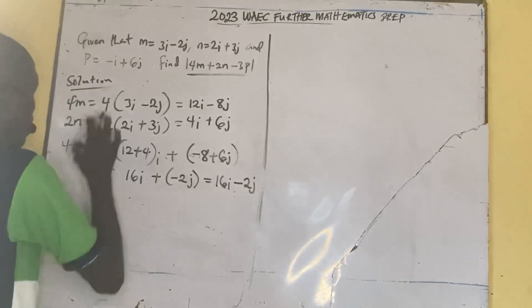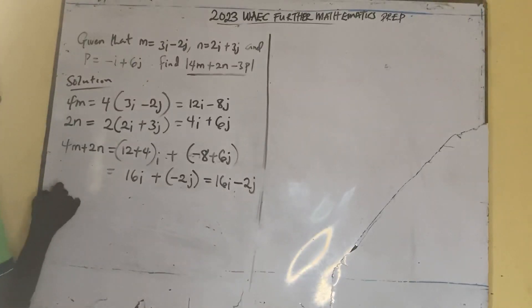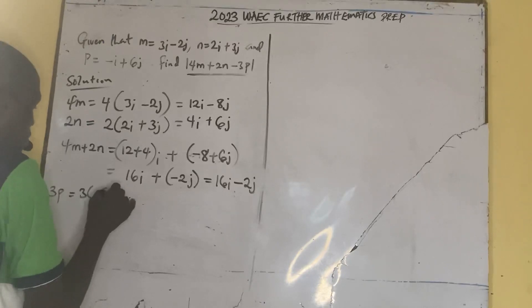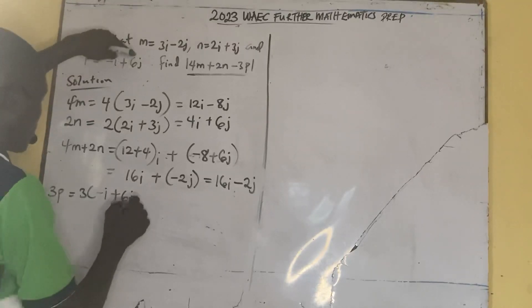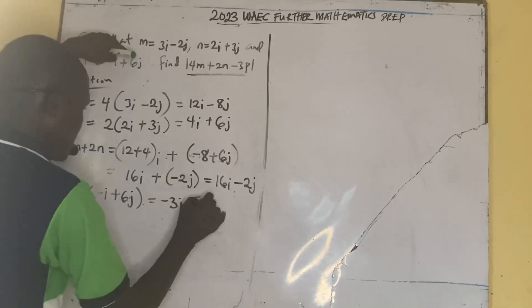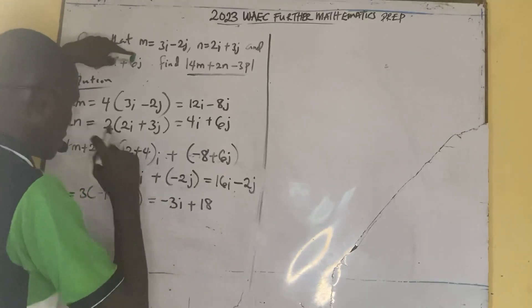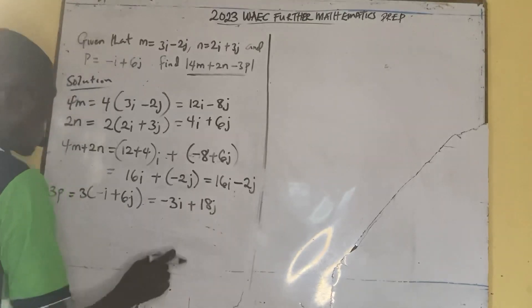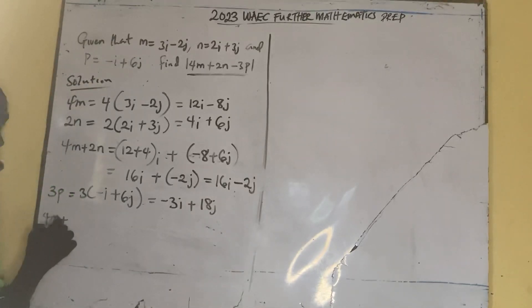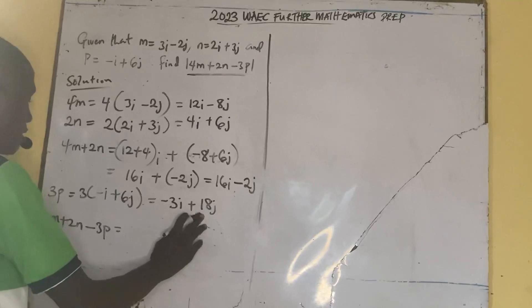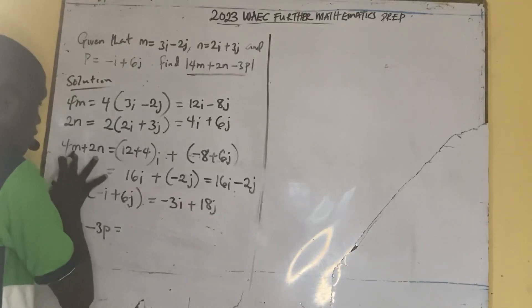So that is that. So we now come to 3p. 3p which is 3 into brackets minus i plus 6j. Minus i plus 6j which is equal to minus 3i plus 18j. 3 times i is minus 3i, 3 times 6j is plus 18j. So finally we have 4m plus 2n minus 3p.